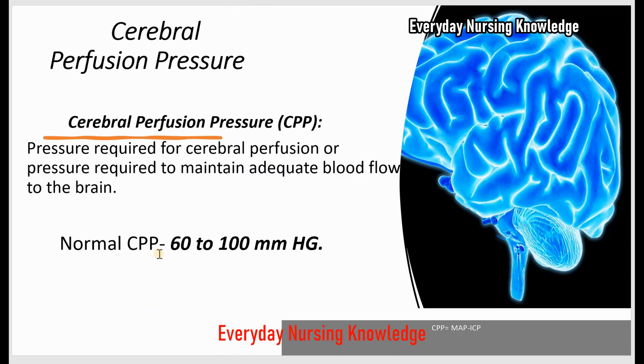The normal CPP is 60 to 100 mmHg. This normal CPP maintains adequate blood flow to the brain.